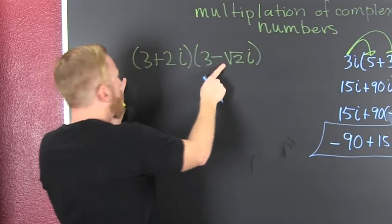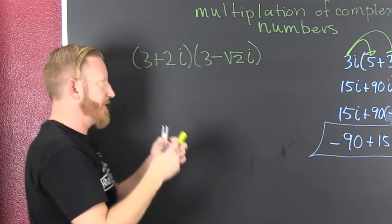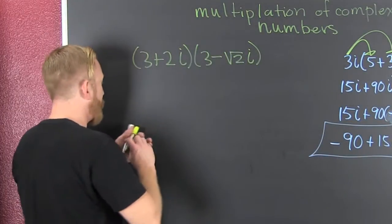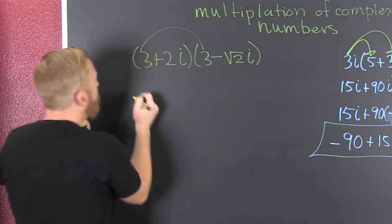What if we look at complex on complex? Yeah, sure. What are you going to do? You're going to first, inner, outer, last. You're going to FOIL. Foiled again. So I go first. Boom. That's nine.